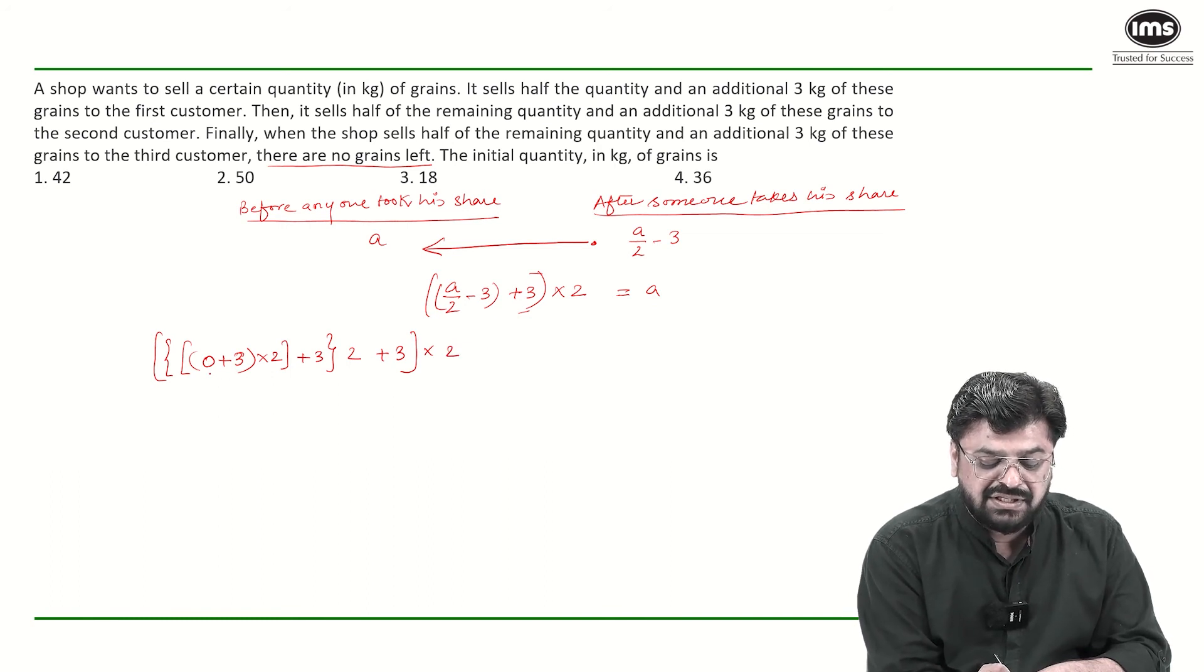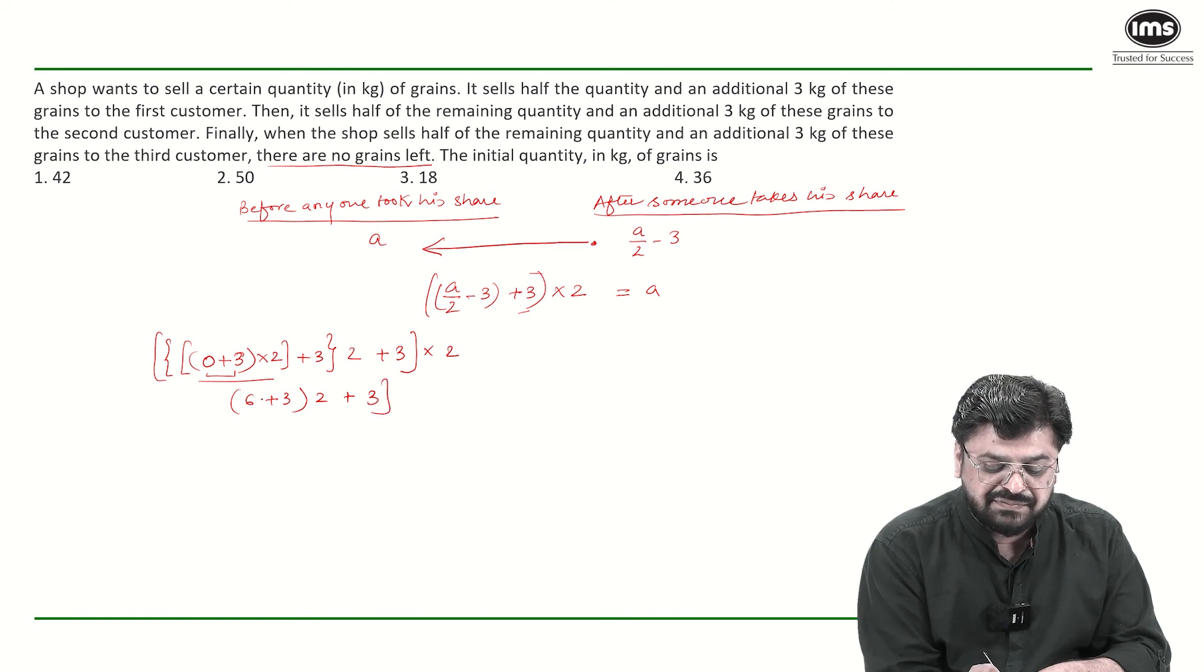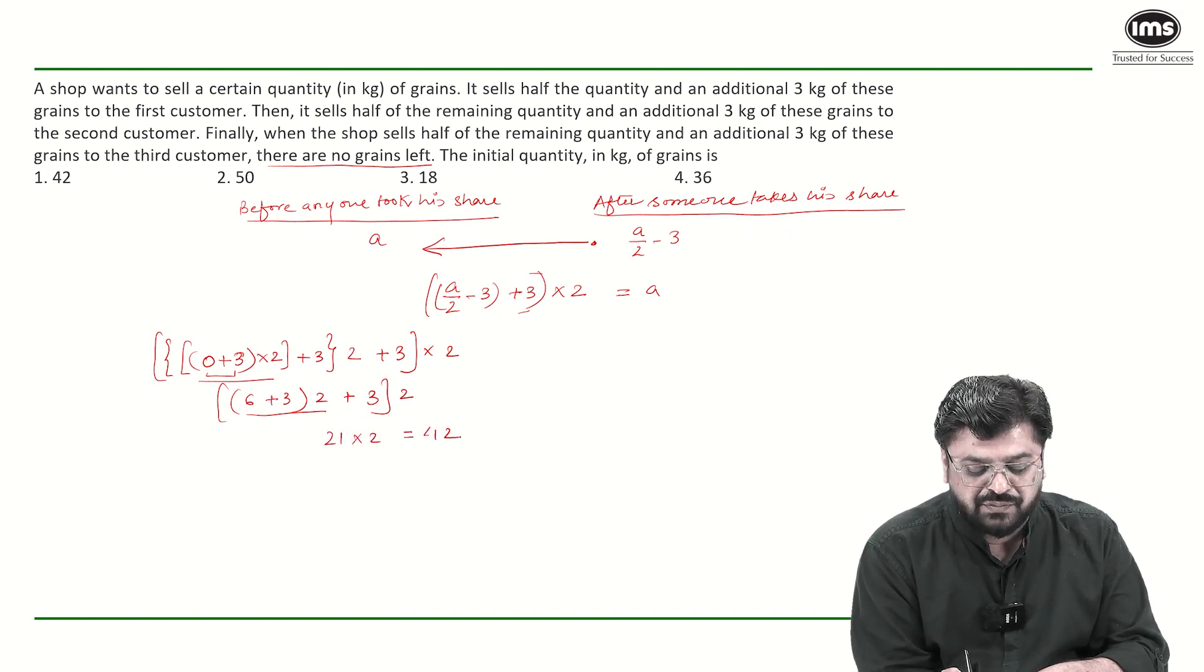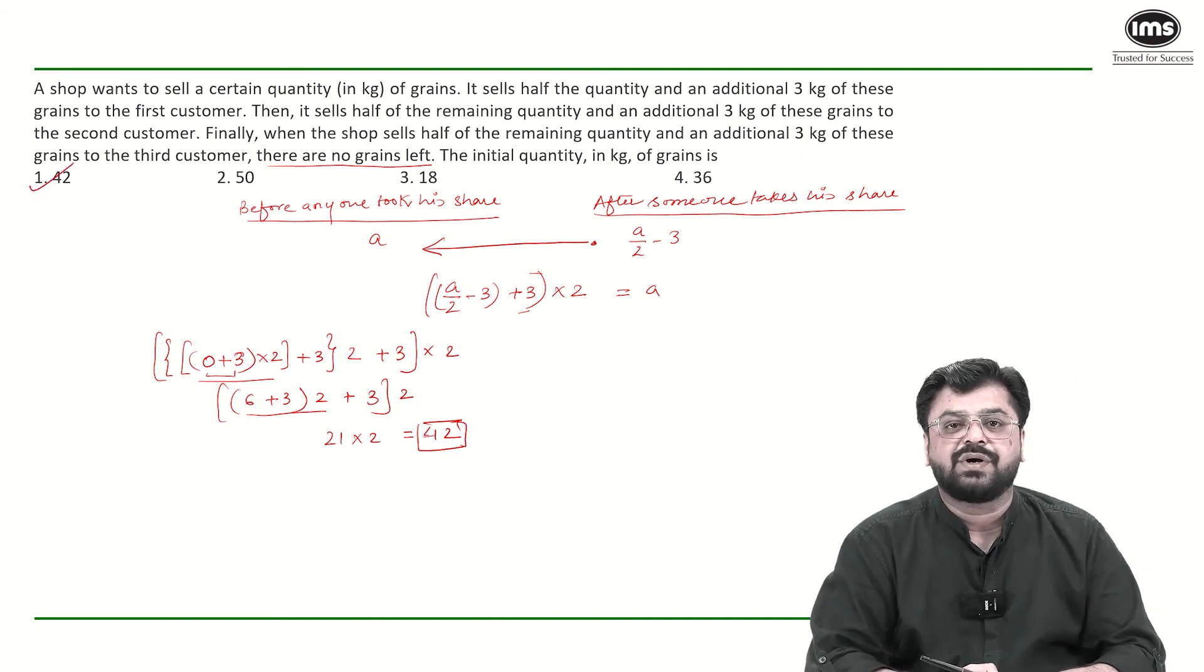So, 0 plus 3 is 3 into 2 is 6. 6 plus 3 is 9 into 2 plus 3. This, 9 to the 18 plus 3 is 21 into 2 is 42. So, answer 1 is the right answer.